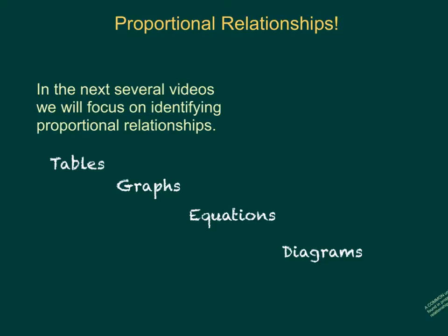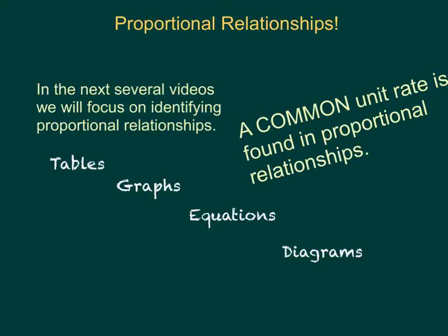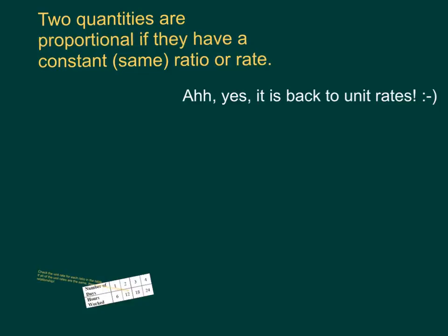We've been using proportions when thinking about our percent problems, and that's just when we have two ratios set equal to one another. So in order for us to see a proportional relationship between two different quantities, the table, the graph, the equations, and the diagrams all have to show us that we have a common unit rate. This video is going to focus on tables, so for the rest of the slides we're only going to be looking at tables and determining whether or not the two quantities have a common unit rate, therefore being proportional.